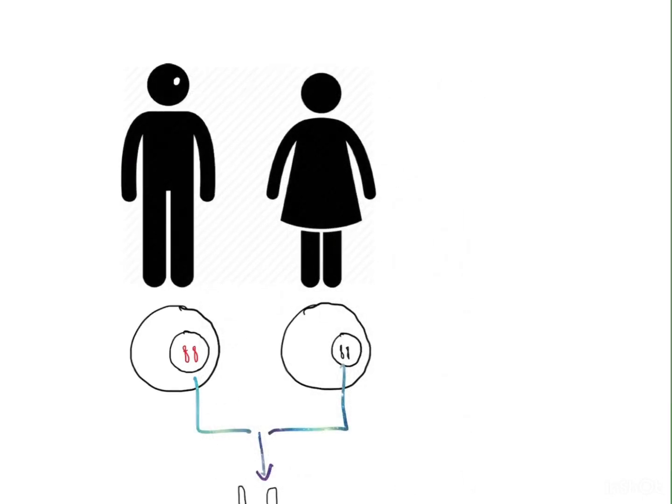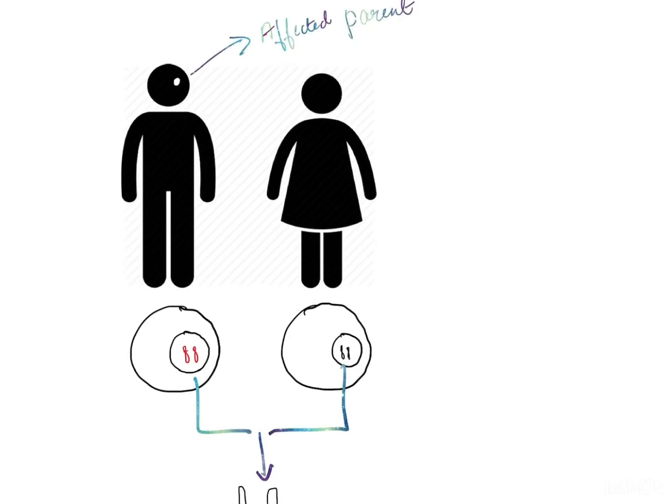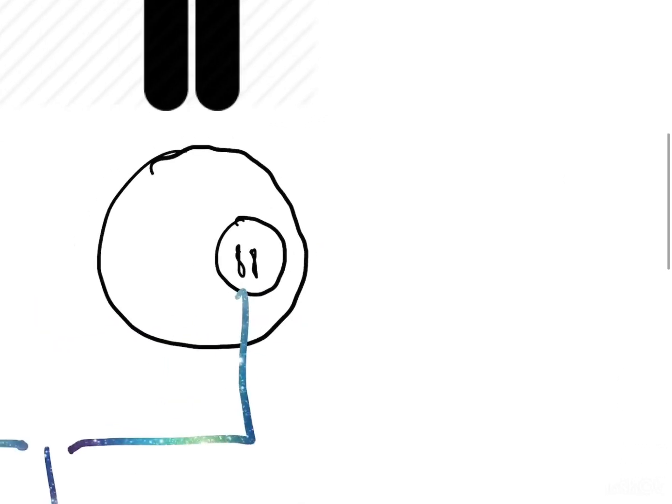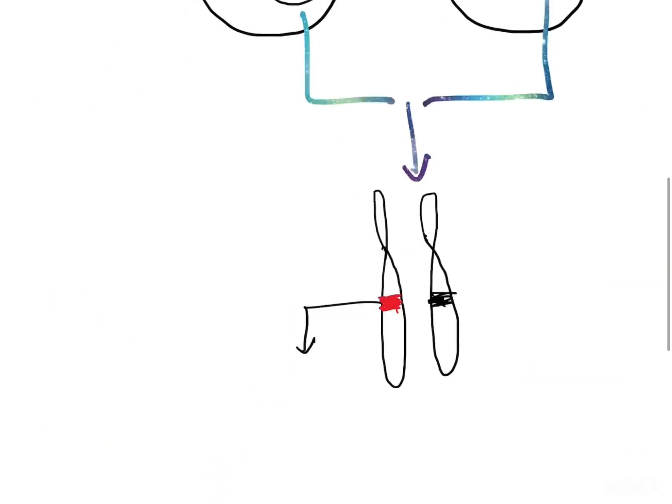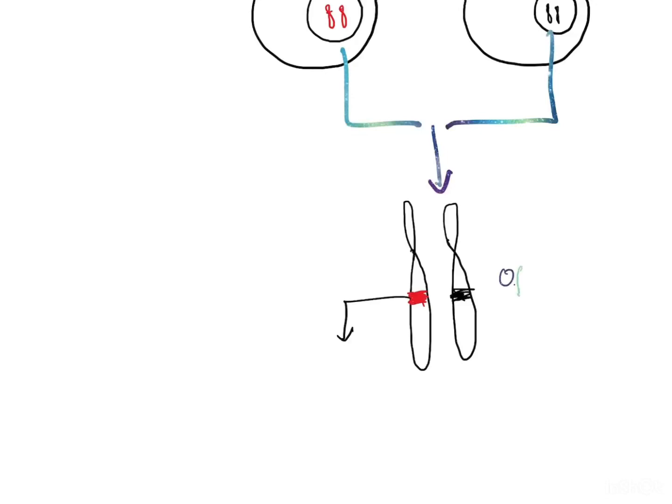Looking at the hereditary pattern of inheritance, in this, one parent is affected having both copies of genes which are abnormal, and the normal parent has both copies of genes that are normal. So due to this, one copy of the gene in the offspring will be abnormal.